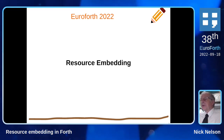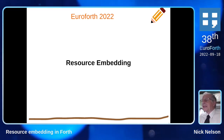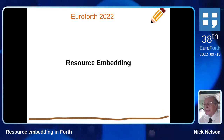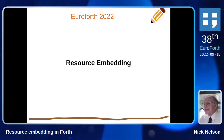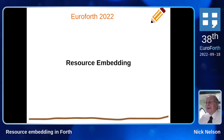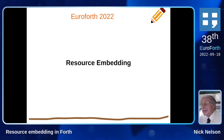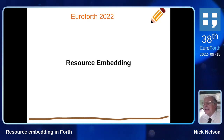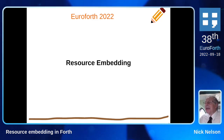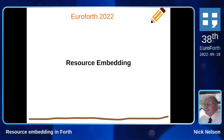Just in case anybody doesn't know what resource embedding is, this means putting all those little files that you need — such as icons, interface definition files, styling sheets and things like that — and stuffing all those things together into your executable file.